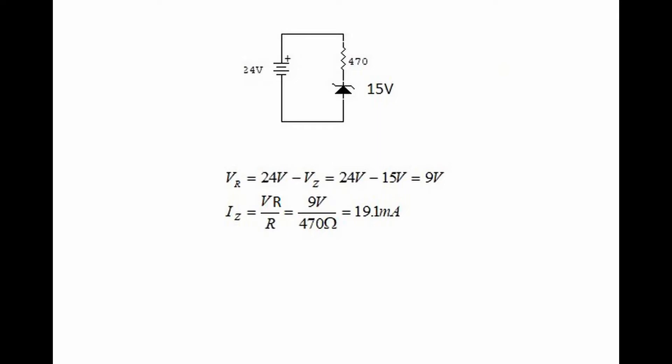To find the voltage dropped across the 470-ohm resistor, we say it must be 24 volts minus 15 volts on the zener diode, which gives us 9 volts across the series resistor. The current through the series resistor is the voltage across it divided by the resistance — 9 volts divided by 470 ohms — which equals 19.1 milliamps. This must also be the current through the zener.